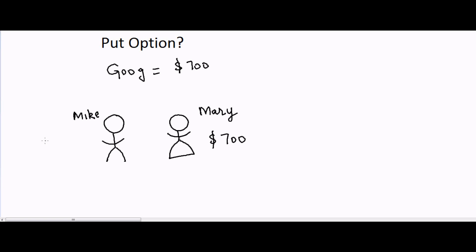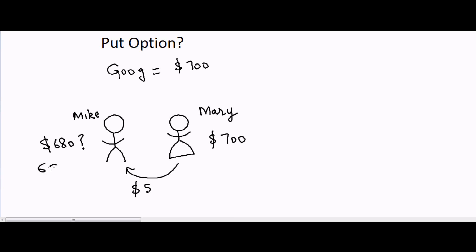Mike wants to enter into Google but thinks he should be able to buy it at $680, not $700. He could just wait one month, two months, or longer — nobody knows. Or he can enter a contract with Mary where Mary gives Mike $5, and for that $5 Mike promises he will buy the stock for $680 after one month.